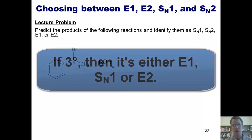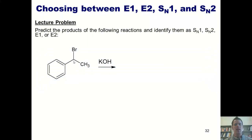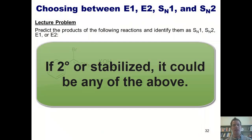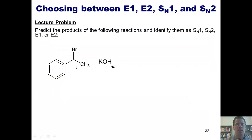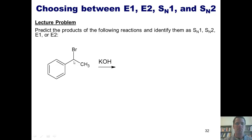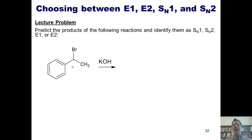If it's tertiary, it could potentially proceed through either E1, SN1, or E2. If it's secondary or stabilized, it could potentially be any of the above. You'll notice that if this bromide leaves, giving me a carbocation at that position, not only is it a secondary carbocation, but it's a stabilized secondary carbocation because it's at the benzyl position, meaning it can resonance-delocalize through the ring. Thus, the carbon is stabilized, which means it could be any of the above reactions: SN1, SN2, E1, or E2.